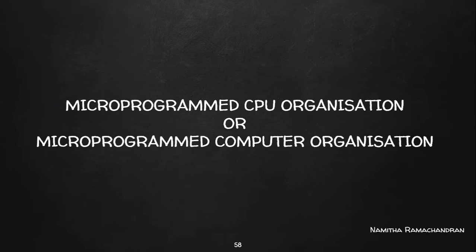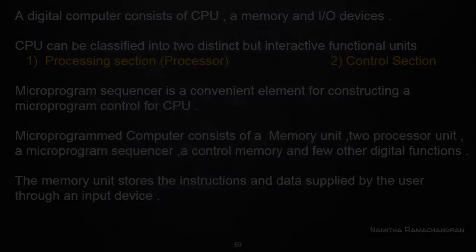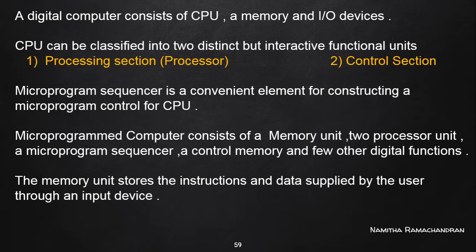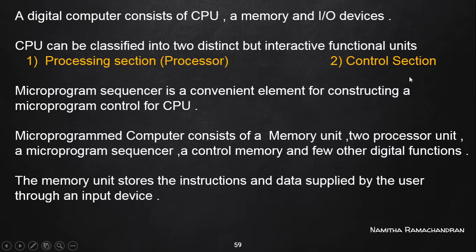Welcome back to this tutorial. We can discuss the organization of a microprogram-based computer. We start from the basis of a digital computer, which consists of a CPU, memory unit, and I/O devices. The CPU can be classified further into a processing unit and a control section. In a microprogram-based computer organization, we are going to consider a microprogram-based control unit organization.